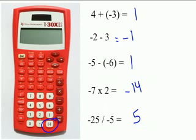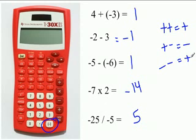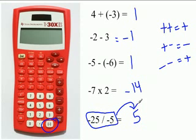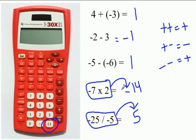Now, when you multiply and divide integers: two positives will equal a positive; a positive and a negative will equal a negative; and a negative and a negative will equal a positive. So when we divided two negatives, our answer is positive. When we multiplied a negative and a positive, our answer is negative. It's just a simple trick to remember to check your answers. But remember, when adding, subtracting, multiplying, or dividing integers, make sure you use your calculator. If you have any other questions, make sure you contact your teacher.